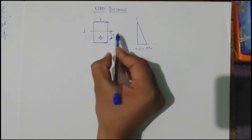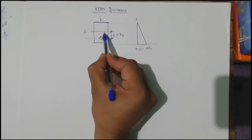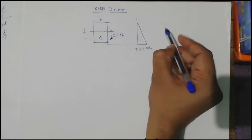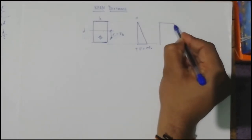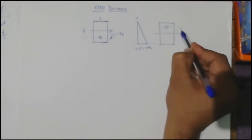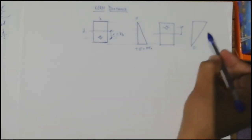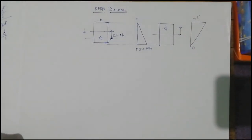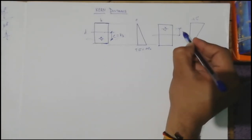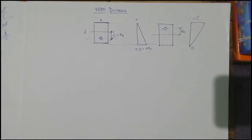This limiting distance is called the kern distance and is denoted by KB, that is the kern bottom distance. Similarly, if we are prestressing the same cross-section above the neutral axis such that the resultant stresses give zero stress at the bottom and positive compressive stresses at the top, that limiting distance is called the kern top distance, denoted by KT.